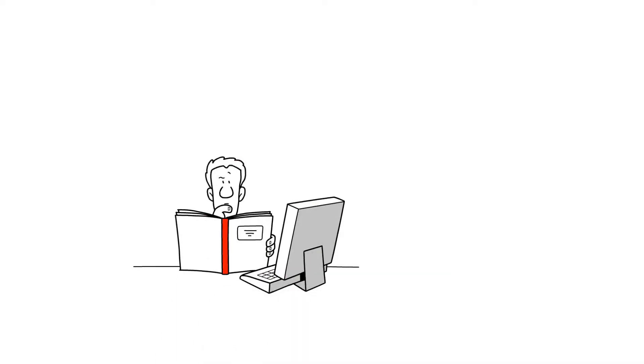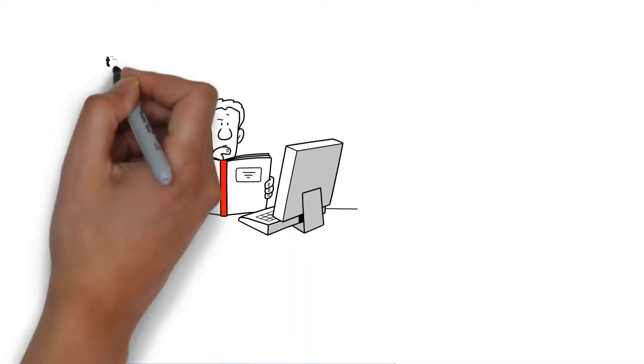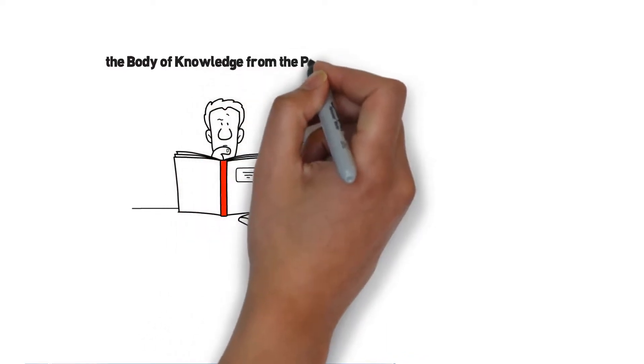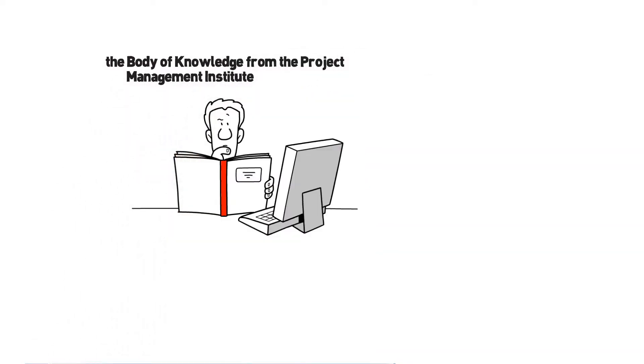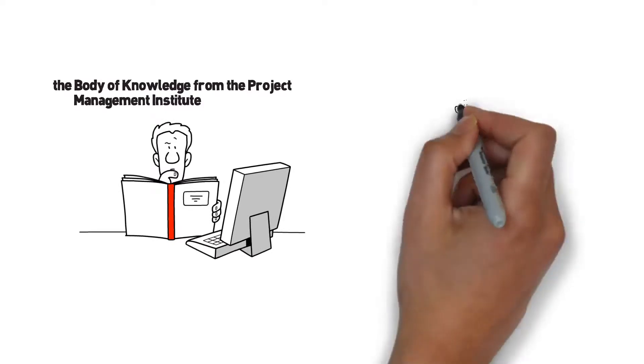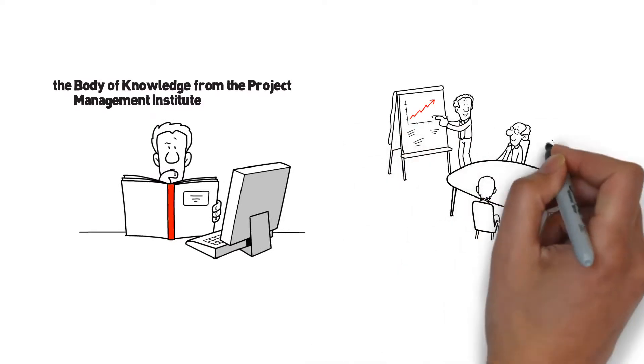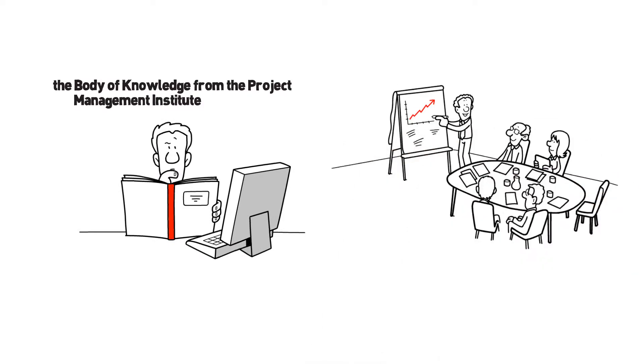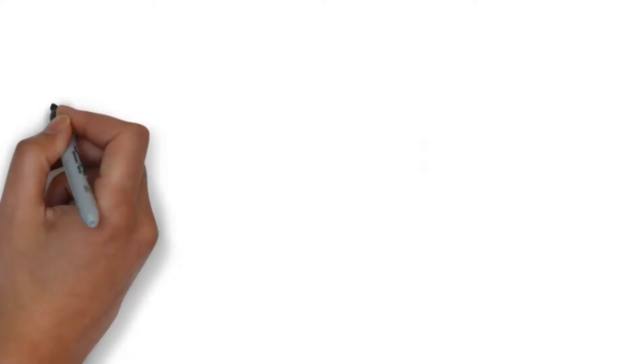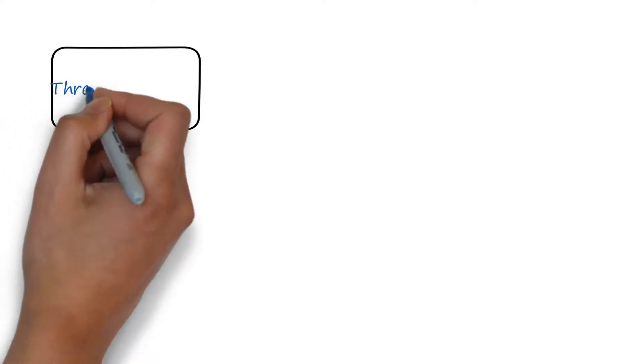A guide every project manager should have close at hand is the guide established by the Body of Knowledge from the Project Management Institute. It is a comprehensive guide and it sets the standard globally for project management. In this guide, besides the five processes, it also contains the 10 areas of knowledge which are imperative to project processes.